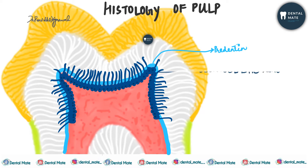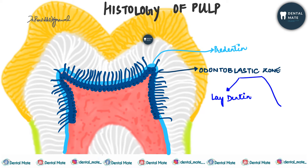Numerous nerve fibers enter the odontoblastic zone and terminate between the odontoblasts. The function of this zone is to lay down dentine and to provide nourishment to the dentine through pulp vessels.